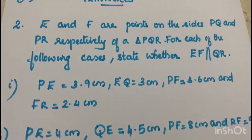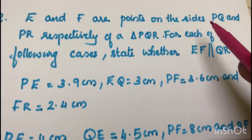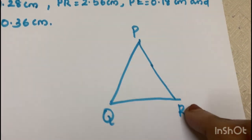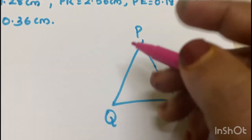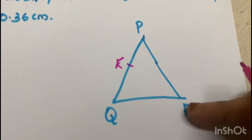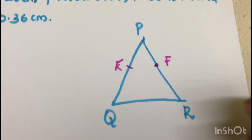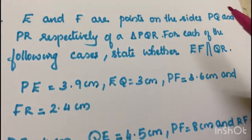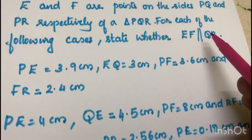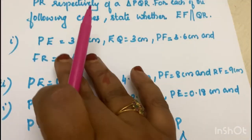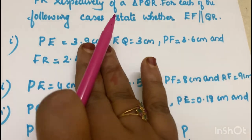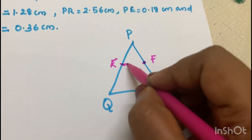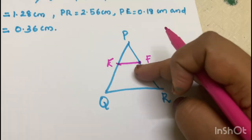Our second question is: E and F are points on the sides PQ and PR respectively of a triangle PQR. In this triangle, point E is on side PQ and point F is on side PR. We are asked: for each of the following cases, state whether EF is parallel to QR.